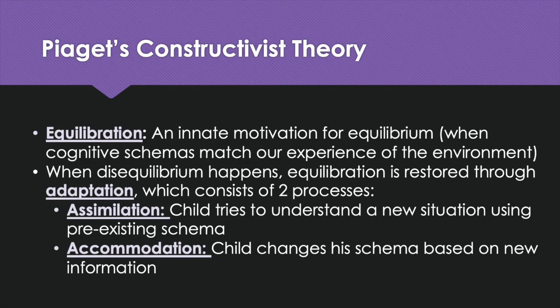The first process is assimilation, which is when the child tries to understand a new situation using a pre-existing schema. For example, he sees a new animal he's never seen before and labels it a dog because he doesn't have a label for that new animal. The second is accommodation, which is when the child actually changes his schema based on new information — like learning that not everything with four legs is a dog. This is a cow; it has black and white spots and says moo.